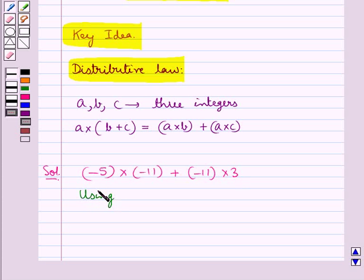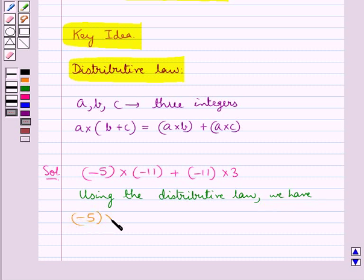Now using the distributive law here, we have minus 5 multiplied by minus 11 plus minus 11 multiplied by 3 is equal to, now, minus 11 would be common here. So we take out minus 11 multiplied by minus 5 plus 3.